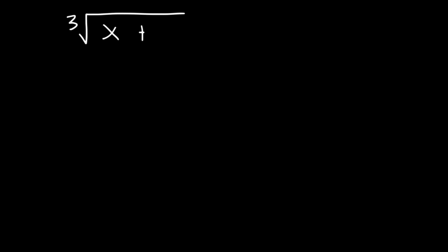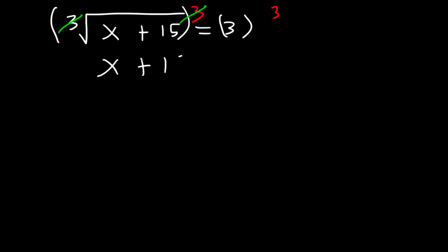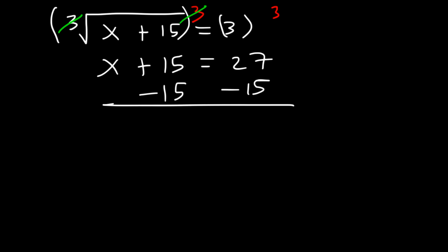Try this one: the cube root of x plus 15 is equal to 3. This time, instead of squaring both sides, we want to raise both sides to the third power, so that the index number of 3 will cancel with the exponent of 3. So it's going to be x plus 15 equals 3 to the third power, which is 27. Now subtract both sides by 15, so x is 27 minus 15, which is 12.